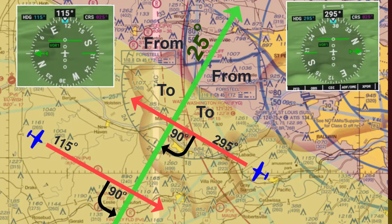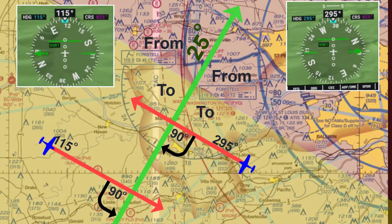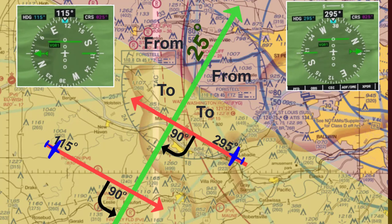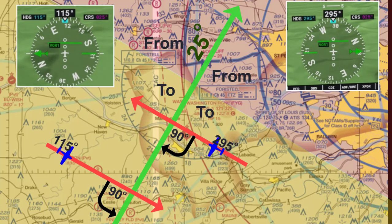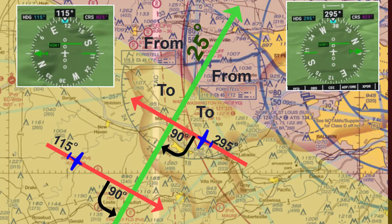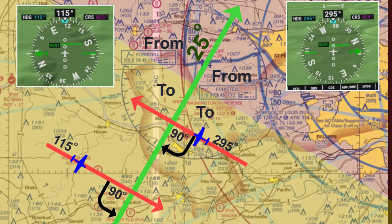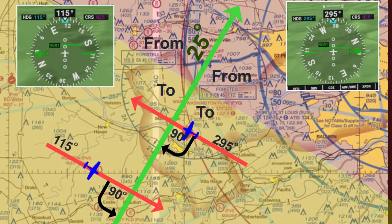Now notice for both flights how the D-bar starts to move closer to the center, indicating I am getting closer to the 25-degree radial. The D-bar for the flight heading west is moving faster because I am closer to the VOR, where the D-bar for the flight heading east moves slower because I am further away from the VOR. In other words, the sensitivity increases and the range is narrower the closer you are to the VOR.